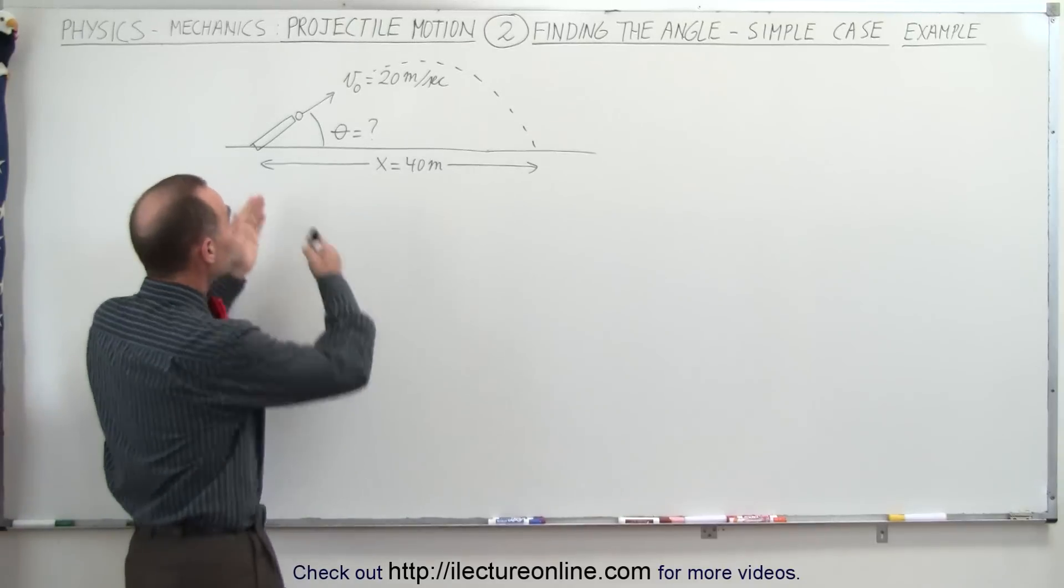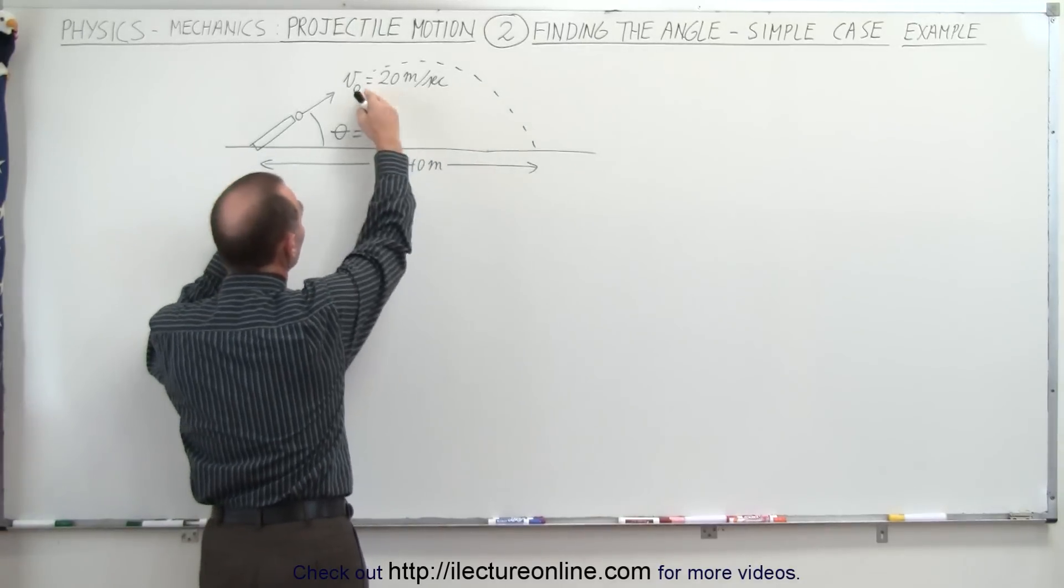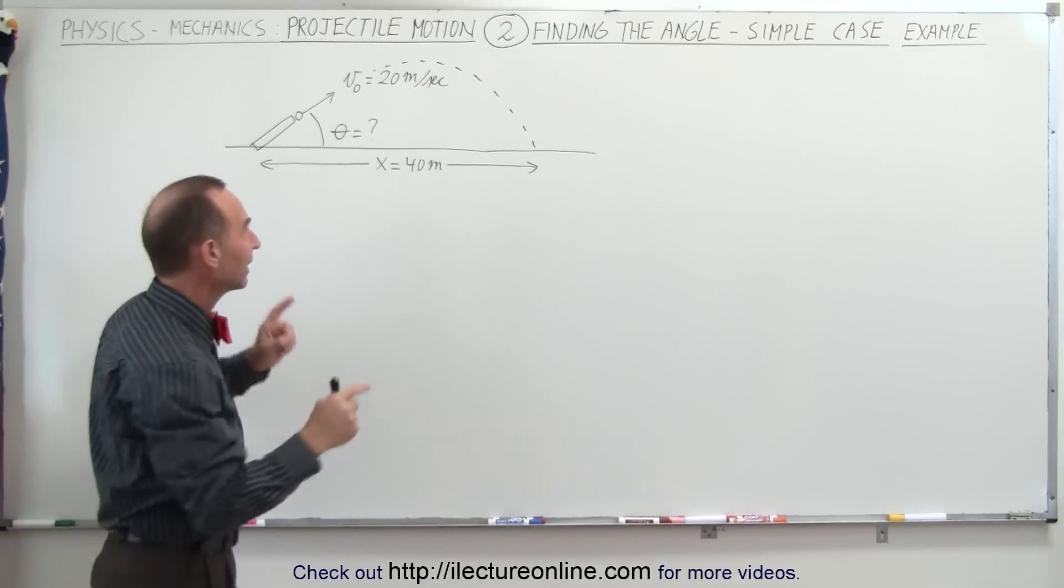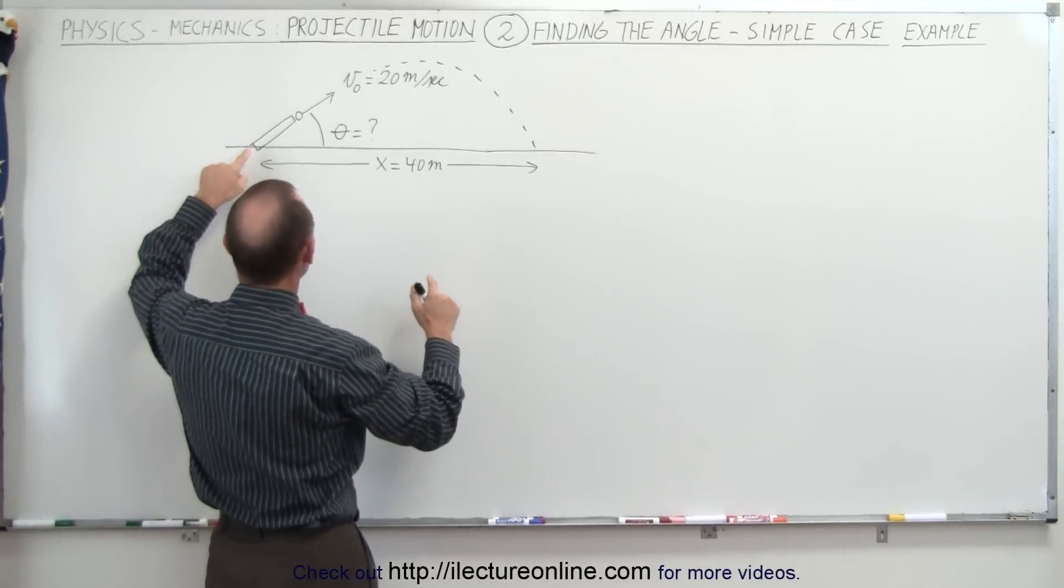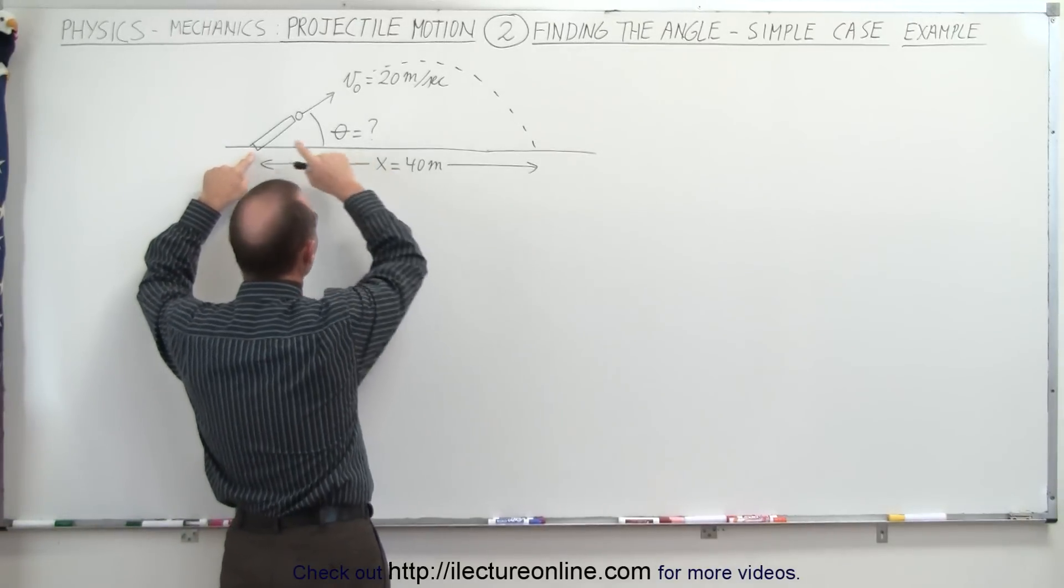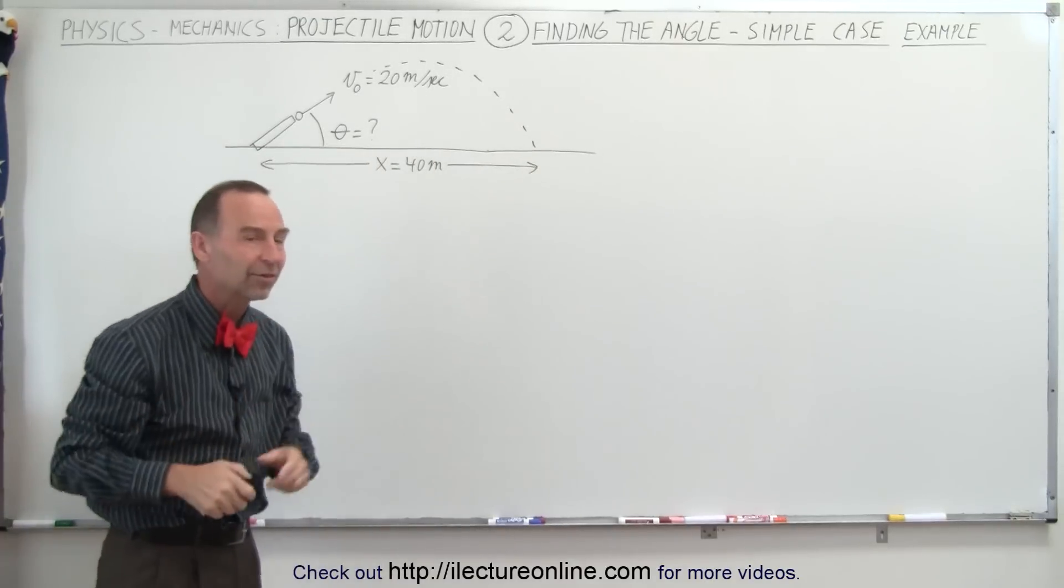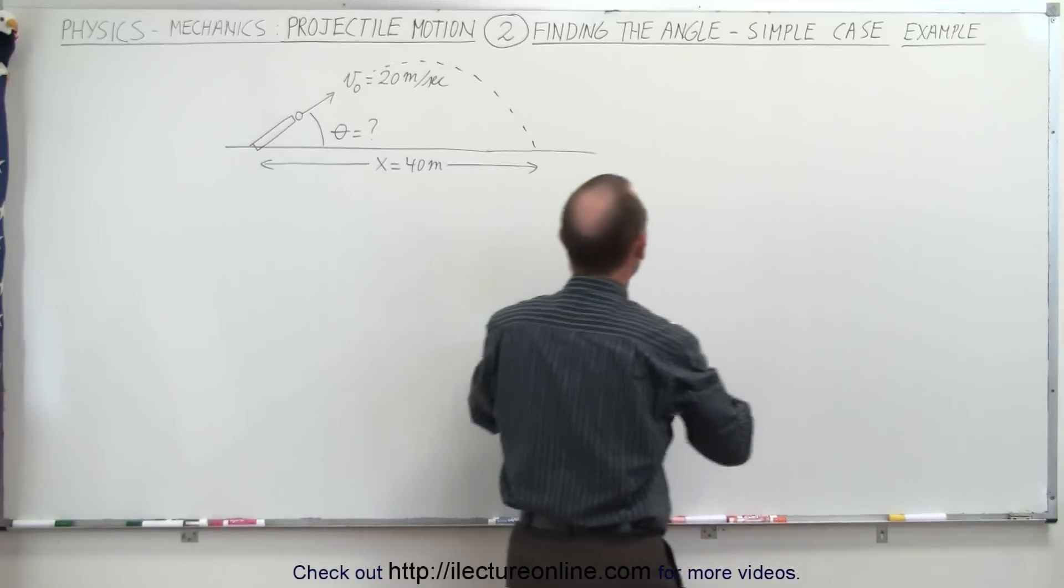In this example, the range is 40 meters and the initial velocity of the projectile is 20 meters per second. Now remember that this equation only works because the height of the projectile at its start, when it's fired, is equal to the height of the projectile where it lands. When the two heights are the same, the equation became as follows.